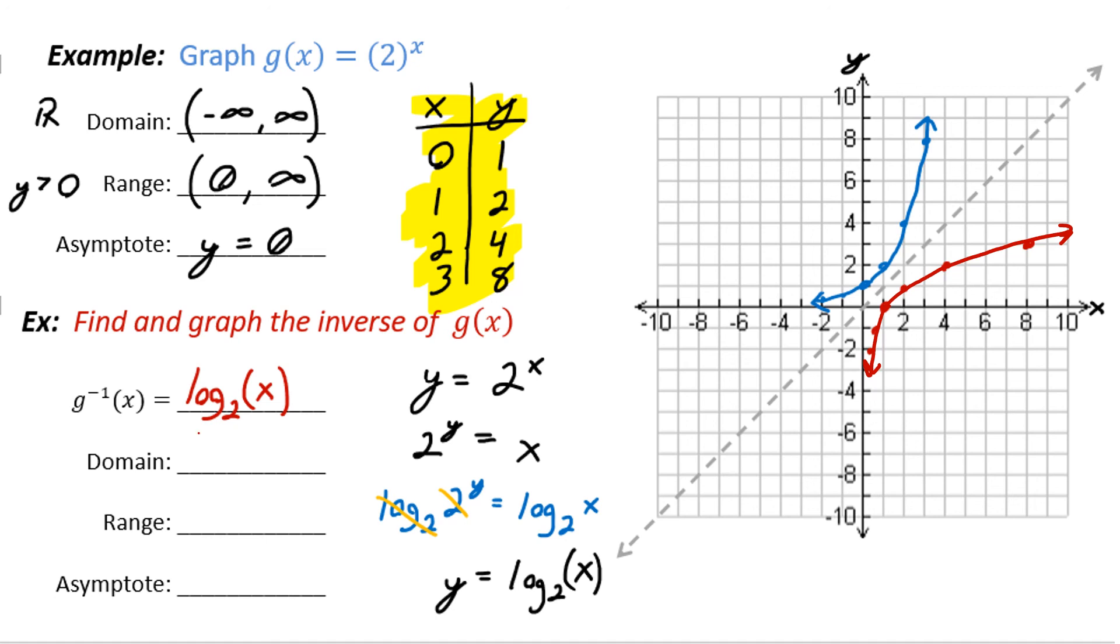The domain, it's basically the domain and range from g of x reversed. So what was the range for g of x is now the domain, from 0 to infinity. And the range is from negative infinity to positive infinity. And the asymptote is x equals 0, which I'm only going to draw on this lower part to show you.